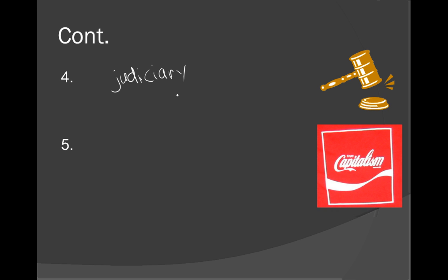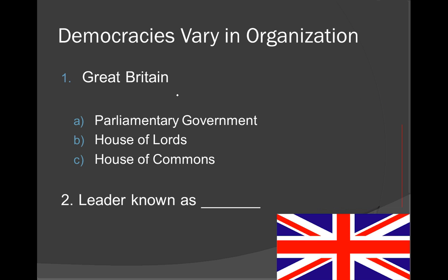Our next big section focuses on the fact that democracies vary in organization. We are not only going to look at the United States as a democracy, but also the democracies of a few other countries around the world. The first country we are going to talk about is Great Britain.